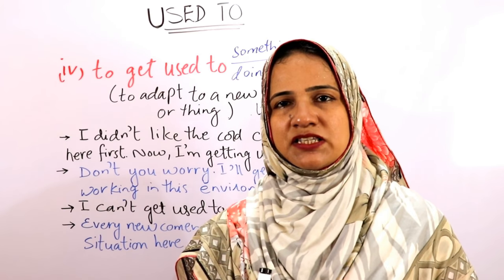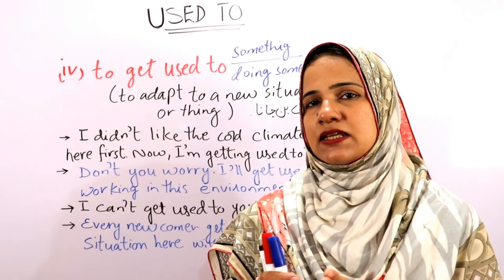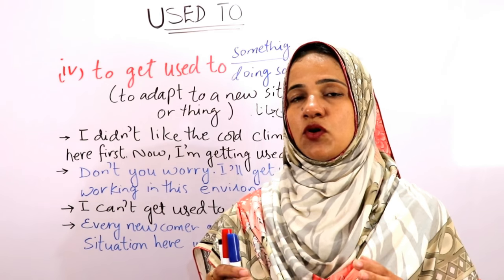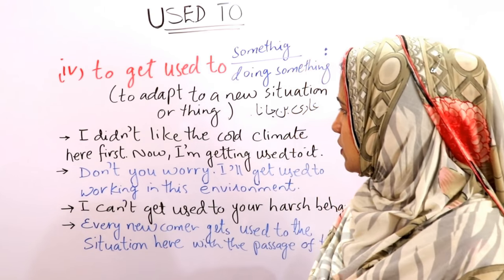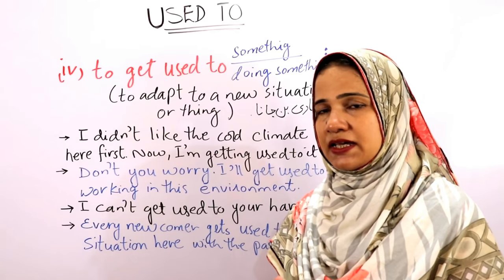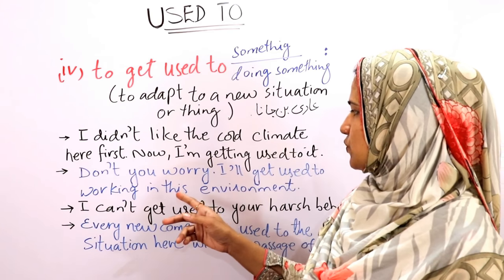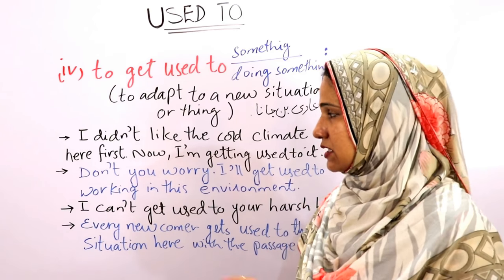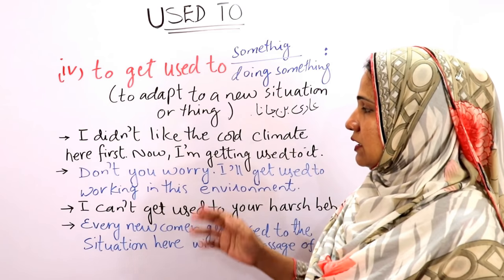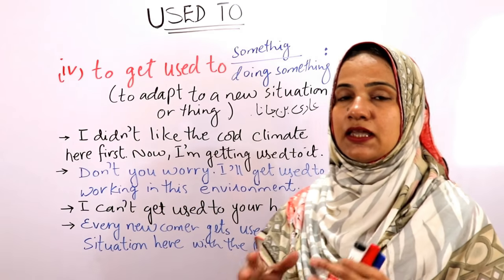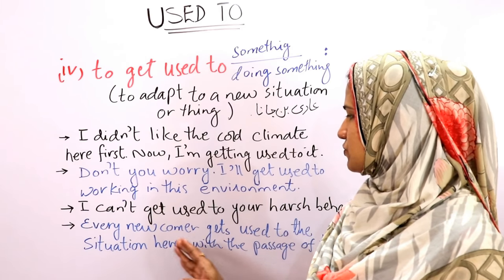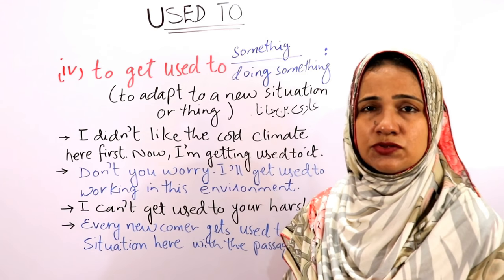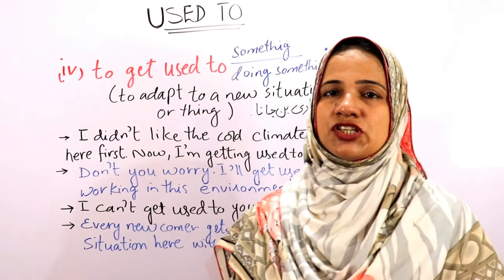In Urdu, this expression means 'aadi ban jana ya bante jana.' To make negative and interrogative sentences, follow the rules of the tense being used. For example: 'I'm not getting used to it' — 'Am I getting used to it?' 'I won't get used to working in this environment' — 'Will I get used to working in this environment?' 'Every newcomer does not get used to the situation here' — 'Does every newcomer get used to the situation here?'